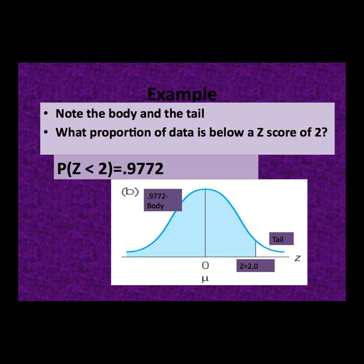What proportion of data is below a z-score of 2? Be sure to note the body and the tail. We sketch the distribution and mark the z-score of 2. We are looking for the proportion below a z-score of 2, which is the larger proportion or the proportion in the body. Following the z-table down to a score of 2, the probability that z is less than 2 is .9772, meaning 97.72% of the data fall below a z-score of 2.